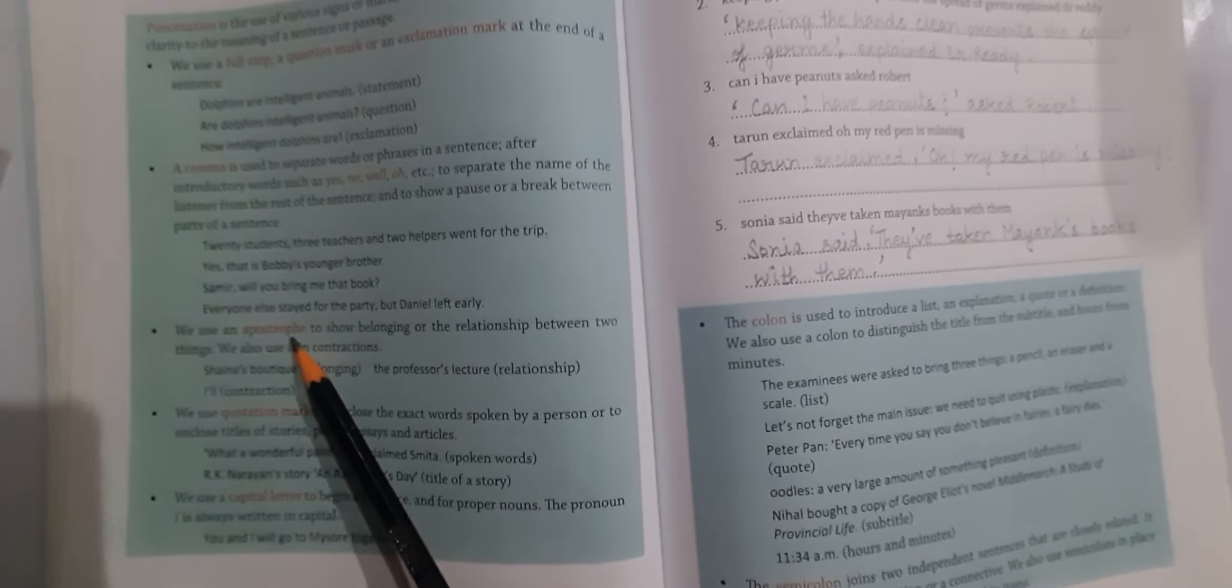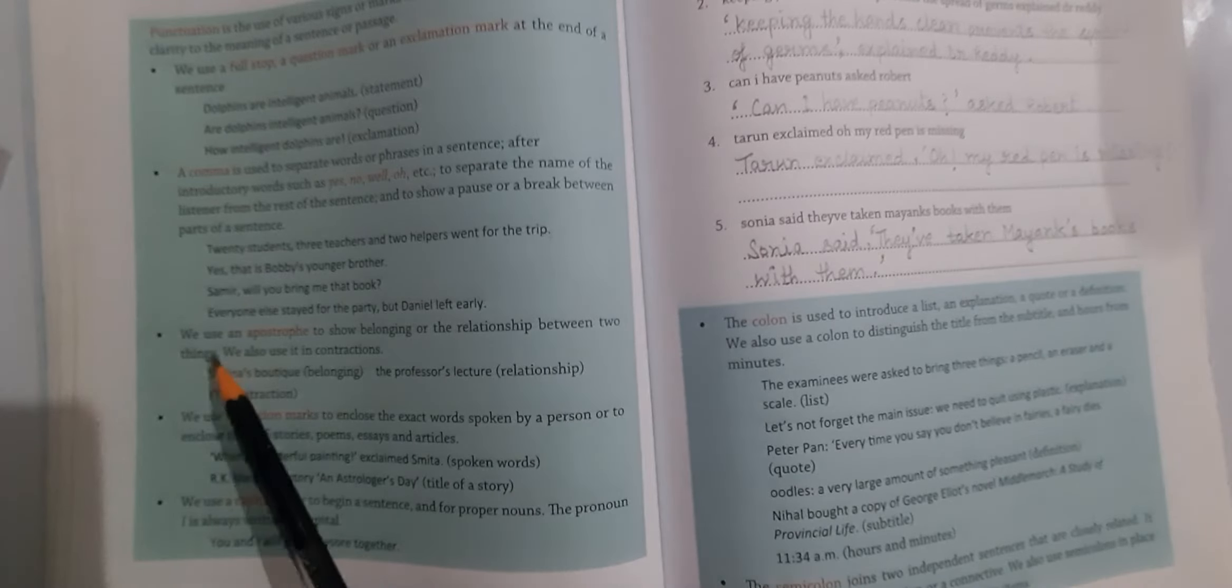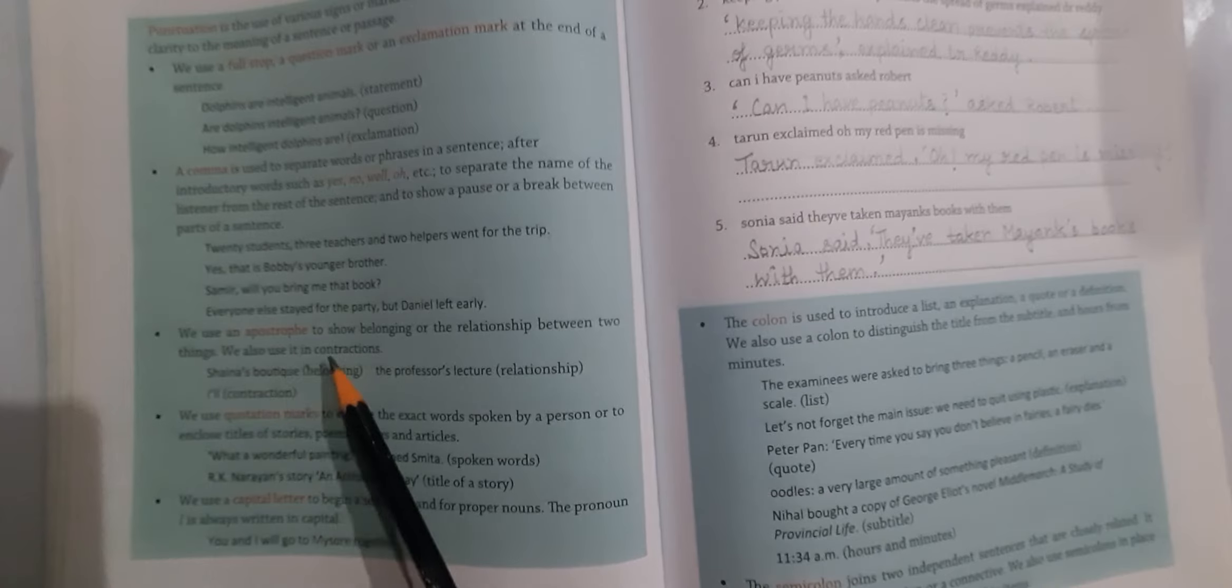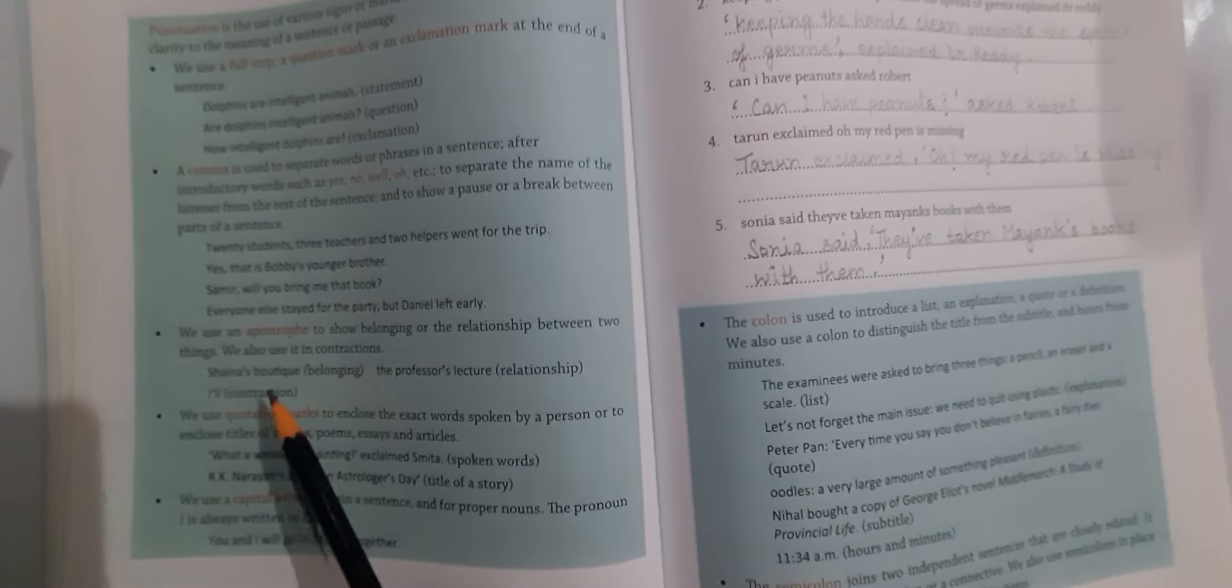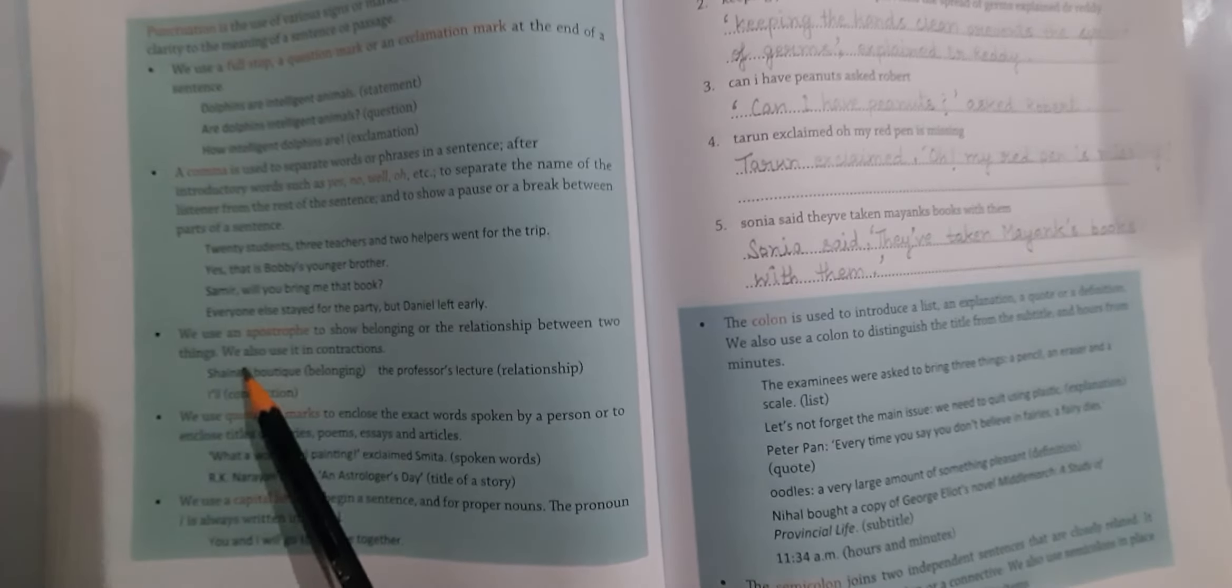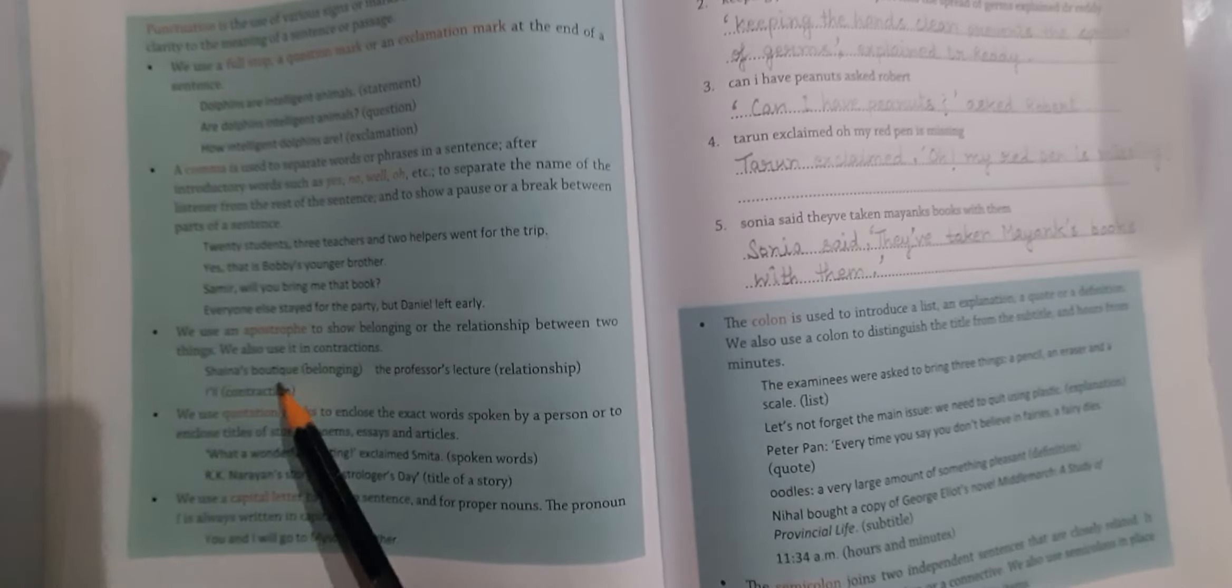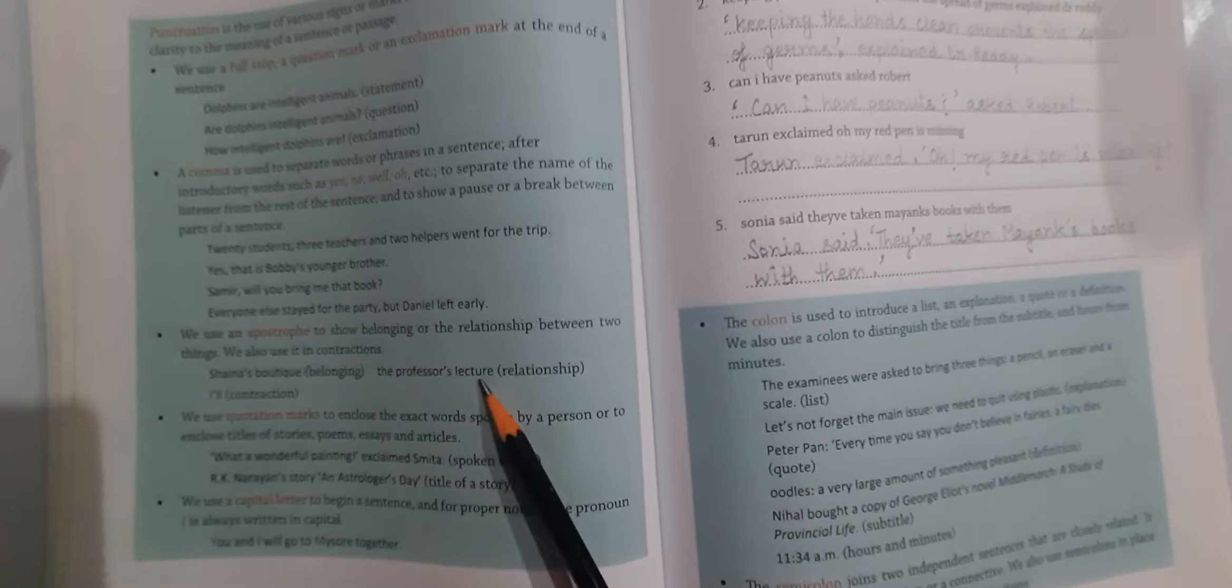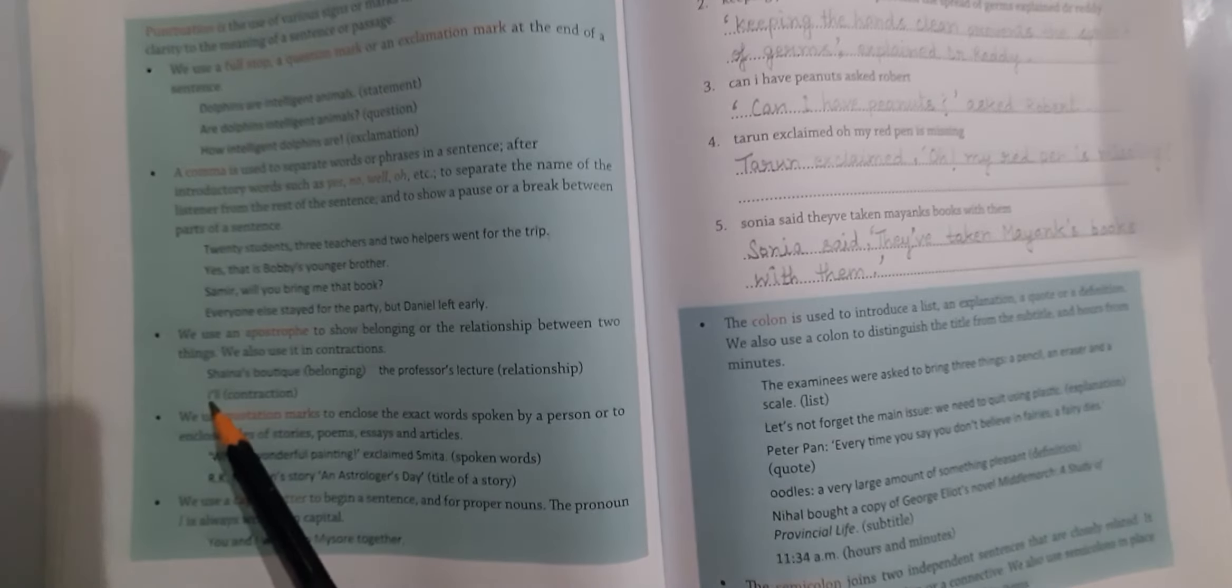We use an apostrophe to show belonging or relationship between two things. We also use it in contractions. For belonging, this boutique belongs to China's - we use apostrophe s: China's boutique. The professor's lecture shows relationship using apostrophe s. For contractions, I will becomes I'll.